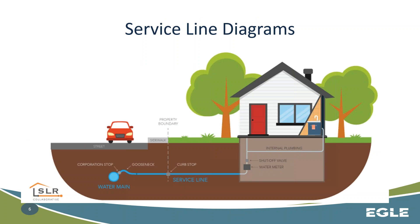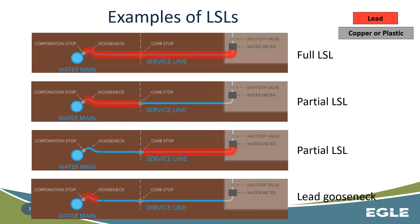Just to go over a quick diagram: you've got the water main that's out in the street, you've got the corporation fitting that comes off the main, and the discharge of that corporation fitting is the start of the service line. It goes all the way into the home to the first shutoff valve or 18 inches, whichever is shorter. And if any portion of that service line is lead, then it's a lead service line.